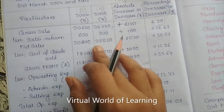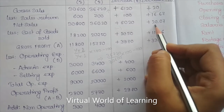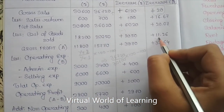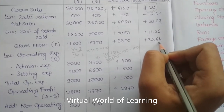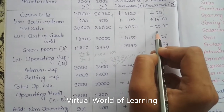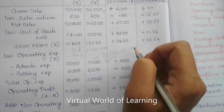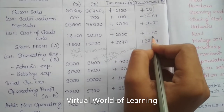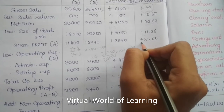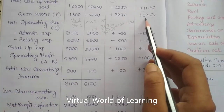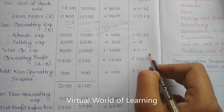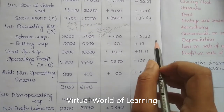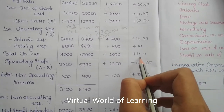Looking at the percentage column: net sales is increasing by 20.07%, while cost of goods sold is increasing by only 11.26%. Since 20.07 is more than 11.26, that is why gross profit is able to increase. Income is increasing at a higher rate than the rate of increase in cost of goods sold. Similarly, operating expenses are increasing by 11.11%, but operating profit is still increasing because the income increase rate is higher than the expense increase rate.